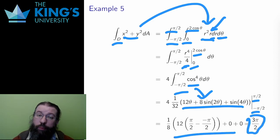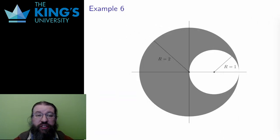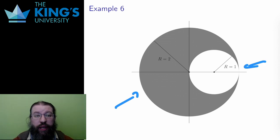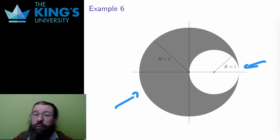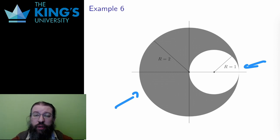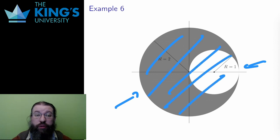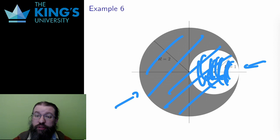Let me do one more example. The region of integration is a circle of radius 2 without the offset circle that I just used. The circle of radius 2 centered at the origin is easy to describe in polar coordinates, and the other circle is the one I was just working on, so I know those bounds. But I want to exclude this other circle. If the domain of the function allows, I can integrate over the whole circle of radius 2 and then subtract the integral over the smaller circle to remove it. I'll calculate the two integrals and then take the difference.